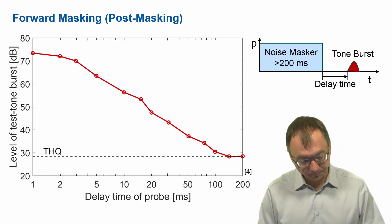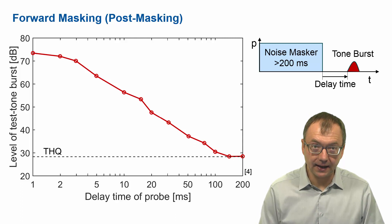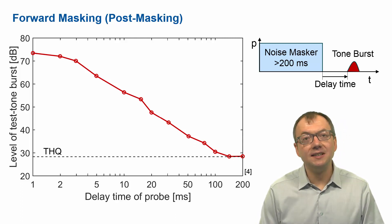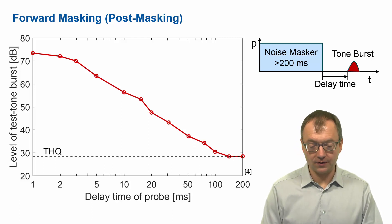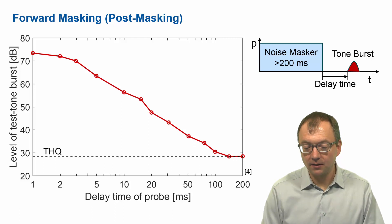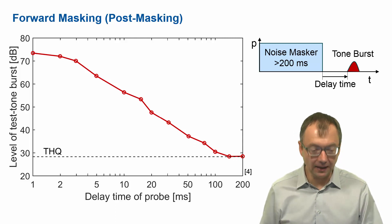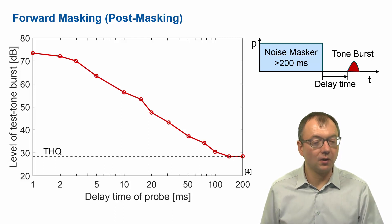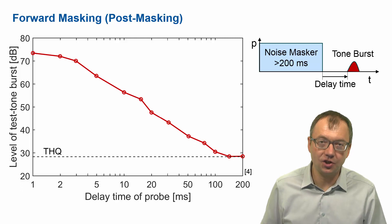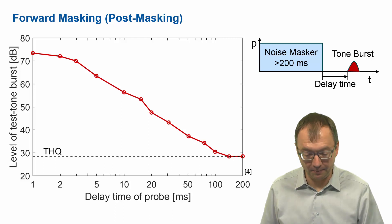What you see on the logarithmic time axis is an almost linear decay of masking over time after the masker, lasting out to beyond 100 milliseconds. In the first one, two, three, five milliseconds, masking is basically unchanged from that of the noise masker, and then the decay starts to happen.